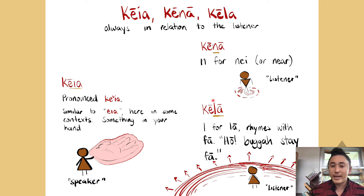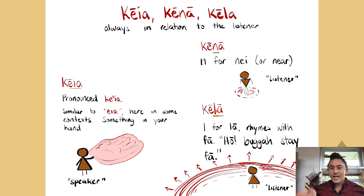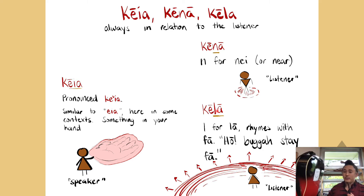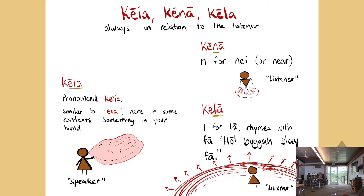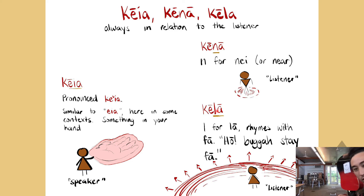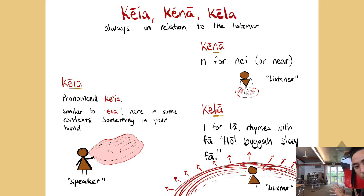Now we have the last one: ke'la. The 'la' stands for 'far' — rhymes with 'fa,' the bugger stay far. This is a 'that,' but this 'that' is far away from the listener, far away from the speaker — it's in nobody's space. So if I go 'nani ke'ia peni' and Randy Jackson says 'nani ke'na peni,' but then I throw the pen all the way over there, I'll say 'nani ke'la peni.' For both of us, it's ke'la peni because the pen is all the way on the other side of the room — none of us can reach it. If it's out of hand's reach, for both of us: ke'la peni.